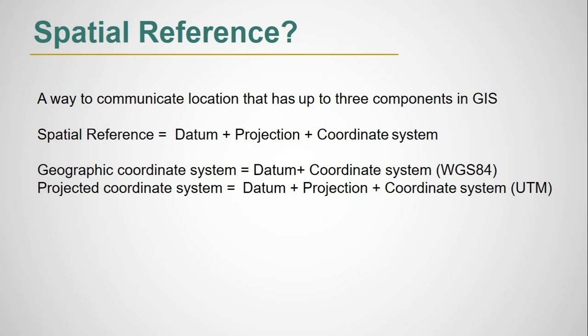To define a geographic coordinate system we need two components among three, and they are datum and coordinate system. WGS 1984 is the geographic coordinate system. In projected coordinate system we need three components of a spatial reference: datum, projection, and coordinate system. For example, Universal Transverse Mercator or UTM projections.